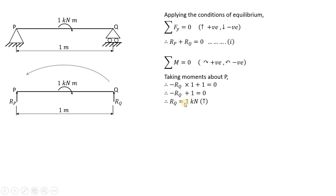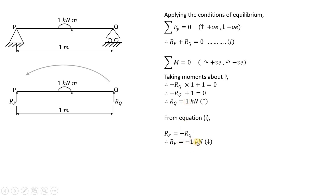The value of RQ is positive, confirming that the assumed upward direction for RQ is correct. From equation 1, RP equals minus RQ equals minus 1 kilonewton. The negative sign indicates that the assumed direction for RP is incorrect — it must act in the downward direction. In this way we can find out the reactions in case of a simply supported beam subjected to a moment at the mid-span.